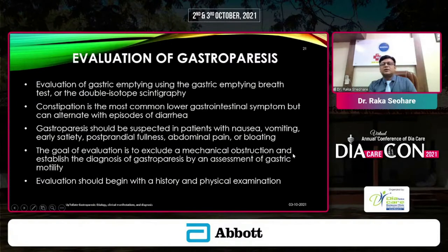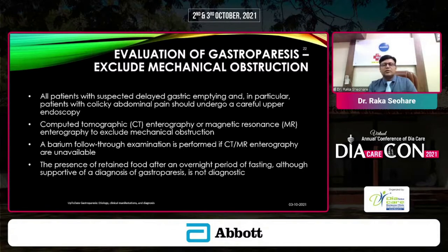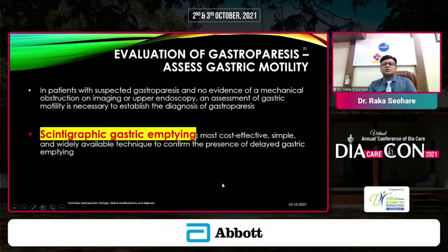Evaluation of gastric emptying should be done using the gastric emptying breath test or double-isotope scintigraphy. Constipation is the most common symptom. Gastroparesis should be suspected in patients with nausea, vomiting, and early satiety. The goal of evaluation is to exclude mechanical obstruction and establish the diagnosis. A combined approach is needed — CT enterography or MRI enterography to exclude mechanical obstruction — and scintigraphic gastric emptying is the most cost-effective, simple, and widely available technique to confirm delayed gastric emptying.